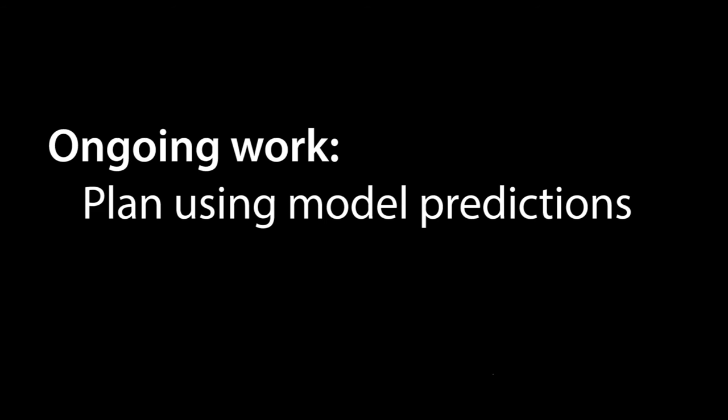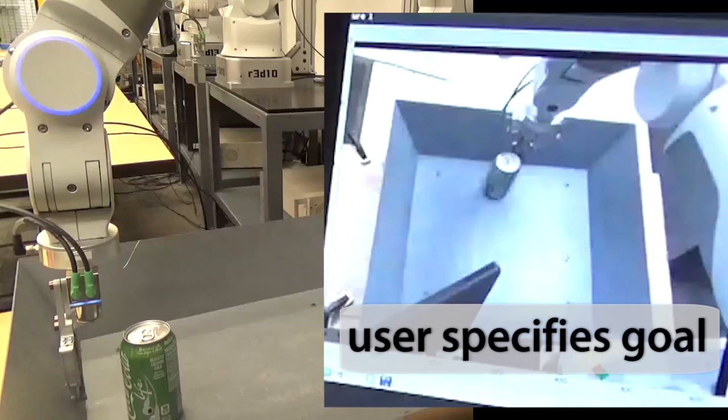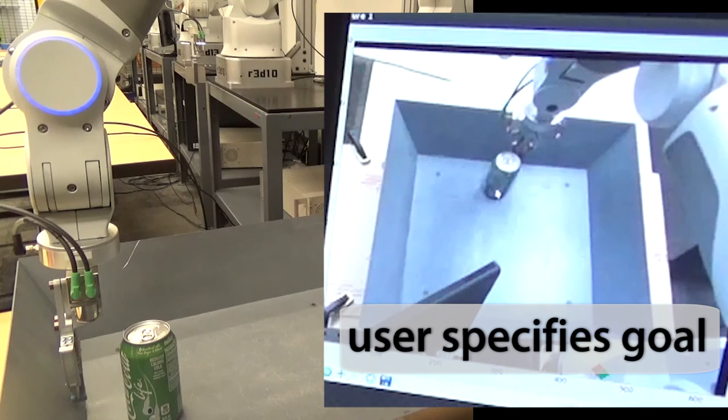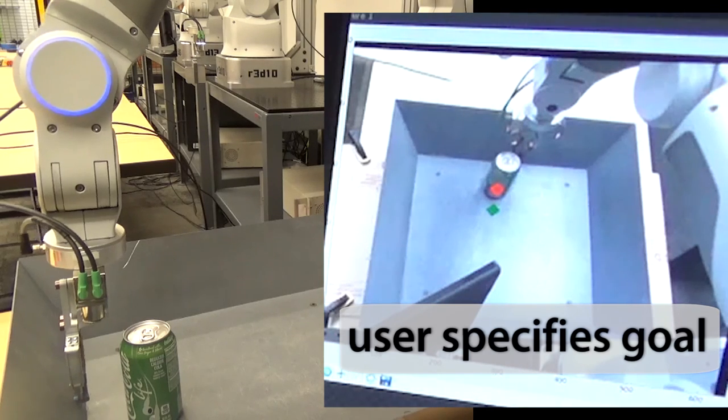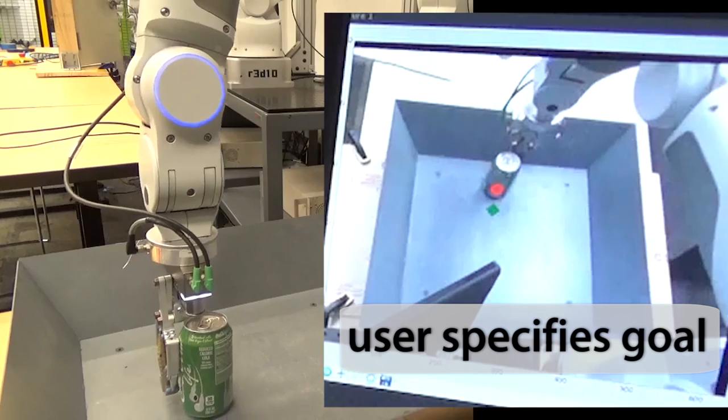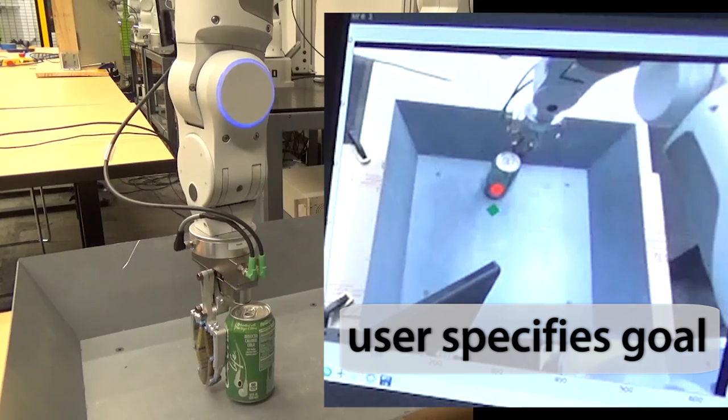In ongoing work, we show how this model can be used to plan. The user can designate a start pixel position and a desired new position for the designated pixel. Using the model, the robot can imagine different futures based on different actions and plan to move the object corresponding to the pixel as desired.